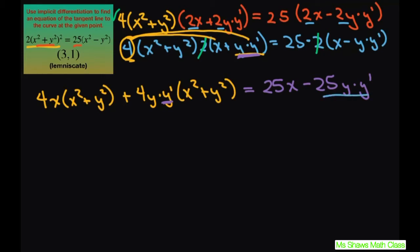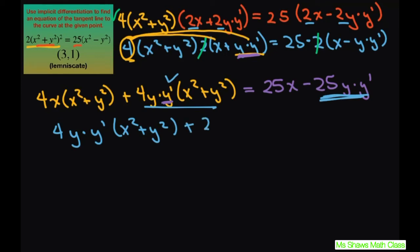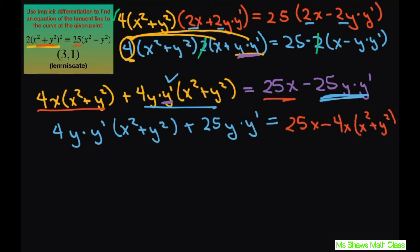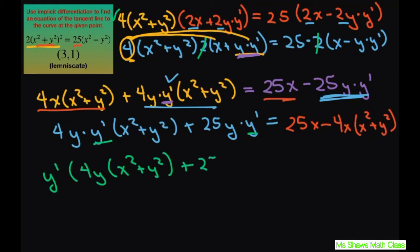Now let's group our y primes together: 4y times y prime times x squared plus y squared, plus 25y times y prime equals 25x minus 4x times x squared plus y squared. We move the non-y-prime terms to the right hand side.